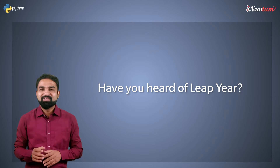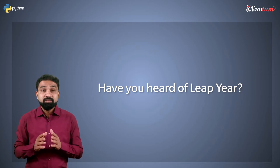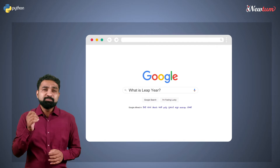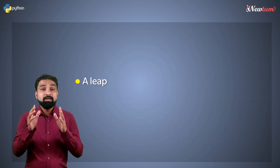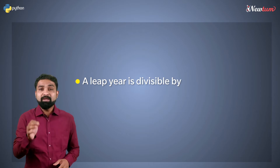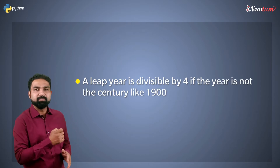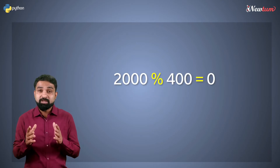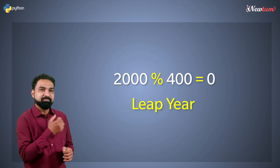Have you heard of leap year? If not, let me tell you what it is. If you want a detailed study of the leap year, I prefer you do some research on Google. But it's pretty simple from a programming point of view. A leap year is divisible by 4 if the year is not a century year, meaning ending with 00. But if the century year is exactly divisible by 400, then the year is a leap year.